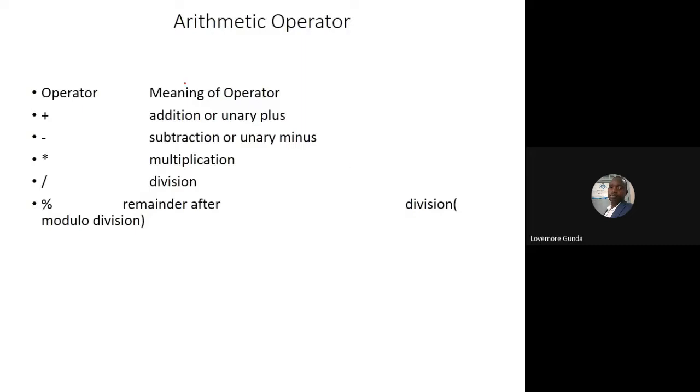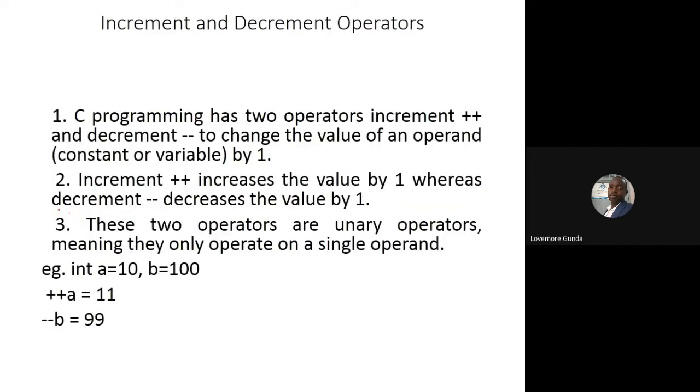Then arithmetic operators: you know this plus, minus, multiply, divide. The modulus will give you the remainder after division. This will give you the value after division, but this one will just take the remainder. Then increment and decrement. If you put plus plus, it means you are increasing by one. Minus minus, you are decreasing by one. So if you say plus plus a, then it means you are going from 10 plus 1, it becomes 11. Minus minus b, it becomes 100 minus 1, and so on.